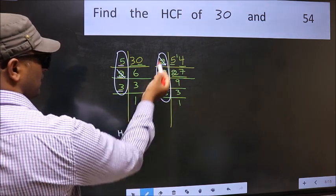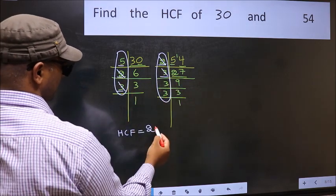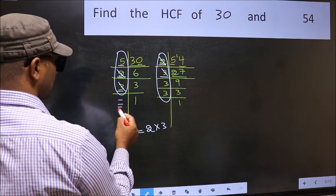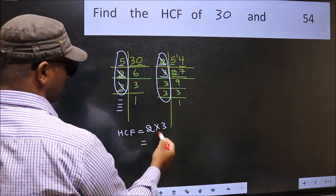Next number 3. Do we have 3 here? Yes. So cut 3 right here. No more numbers have been left out. So our HCF is 2 into 3. 6 is our HCF.